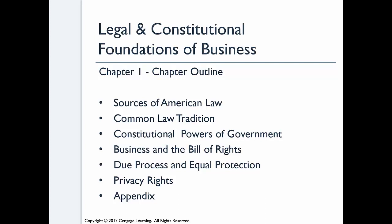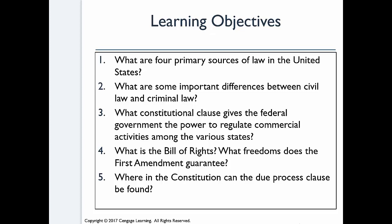According to Miller, there are really five things we're trying to cover in this chapter: the four primary sources of law in the U.S.; differences between civil and criminal law — a lot of people get confused on that one; what constitutional clause gives the federal government power to regulate commercial activities among the various states — note that's among the states, not within, because words really matter in the law; what's the Bill of Rights and what freedoms does the First Amendment guarantee; and where in the Constitution the due process clause can be found.